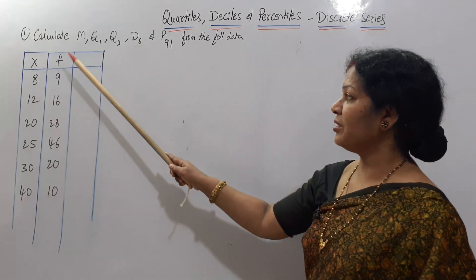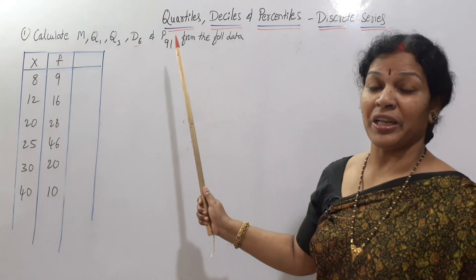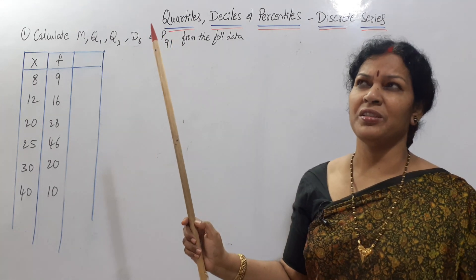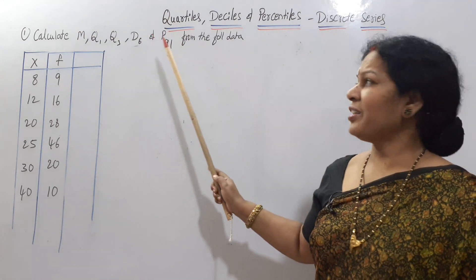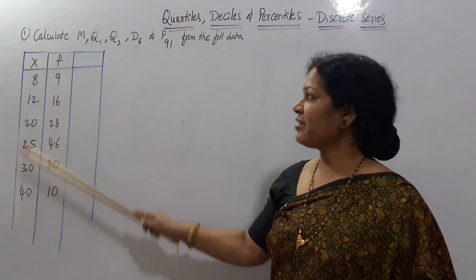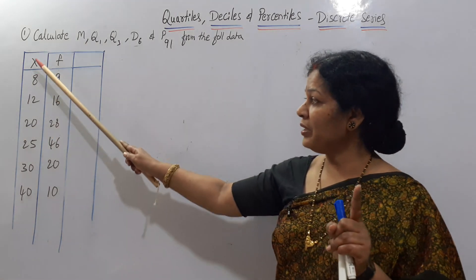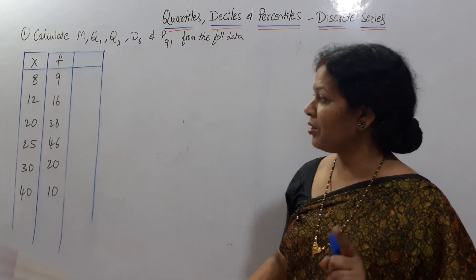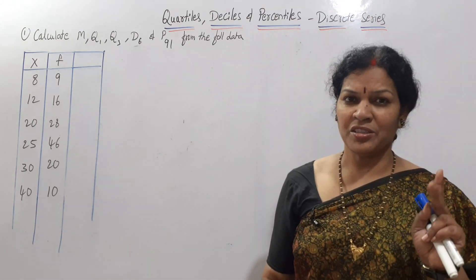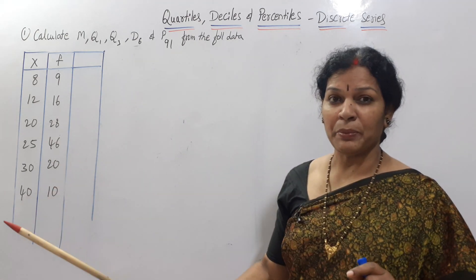The problem asks us to calculate M, Q1, Q3, D6, and P91 from the given data. Data is given as X and frequency. First step: check that X is in ascending order — it's already given in ascending order, so no change needed. Second step: prepare the cumulative frequency.